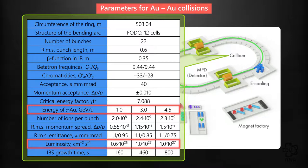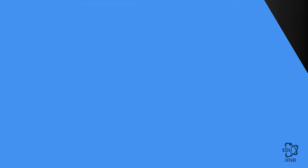This is the energy field where the maximum high density of baryonic matter is expected in colliding beams. Unfortunately, at an energy level lower than 3 GeV per nucleon, the luminosity decreases due to space charge limitation.